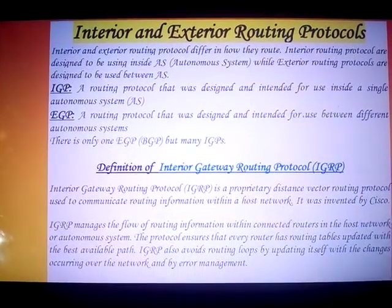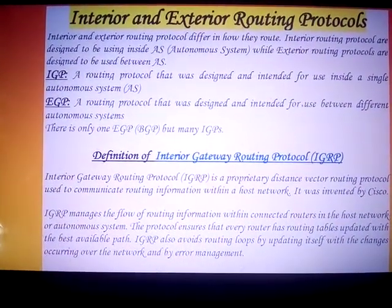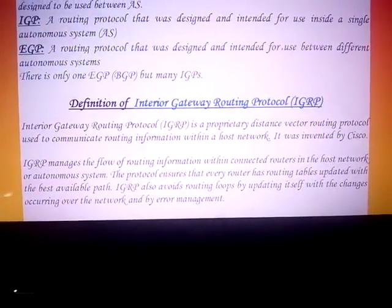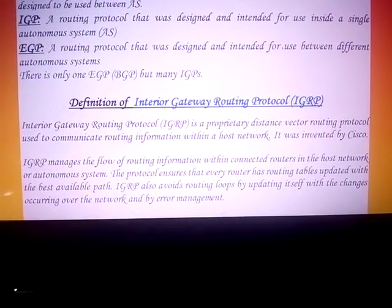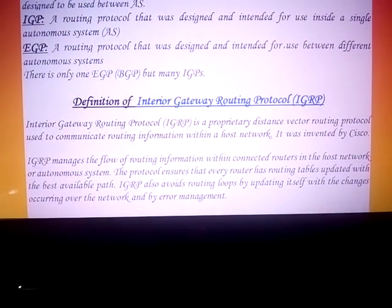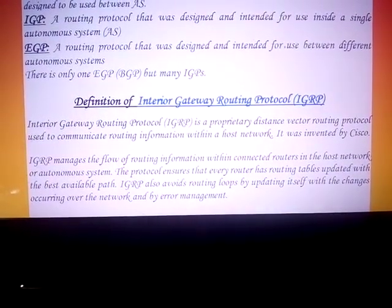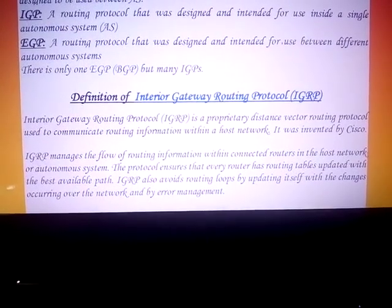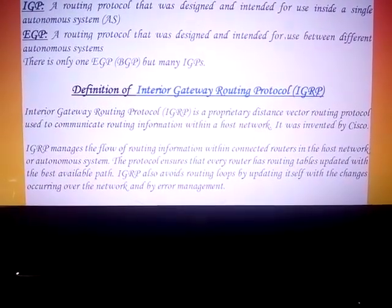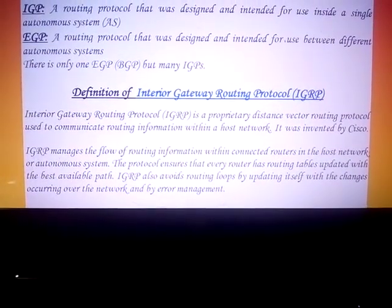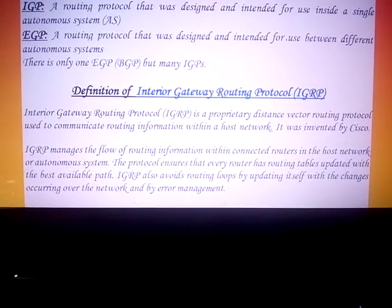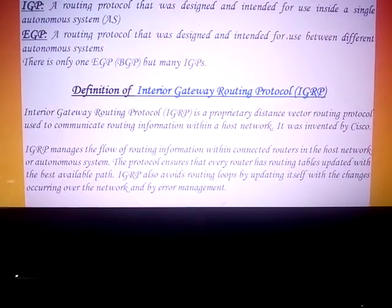Interior Gateway Routing Protocol — IGRP — is a proprietary distance vector routing protocol. It uses two parameters: distance and vector. Distance is the hop count, and IGRP manages the flow of routing information within connected routers.